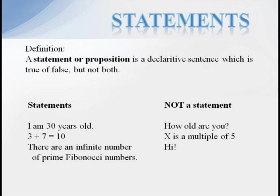I'm 30 years old, 3 plus 7 equals 10, and there are an infinite number of prime Fibonacci numbers. The first statement is false, at least for me. The second statement is true, and the third statement is one which has never been able to be proved or disproved.